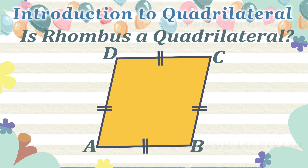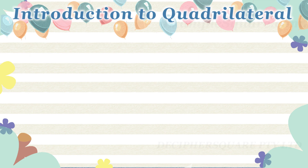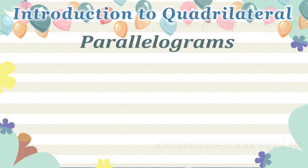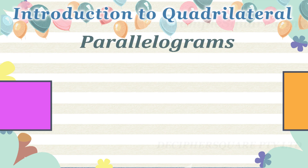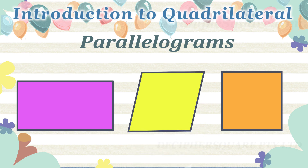Is a rhombus a quadrilateral? Yes, a rhombus is a specific type of quadrilateral in which all four sides are equal. In a rhombus, opposite angles are equal and opposite sides are parallel. Parallelograms are also two-dimensional shapes with four sides in which opposite sides are parallel and equal, so parallelograms are types of quadrilaterals.